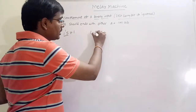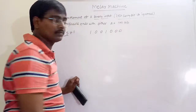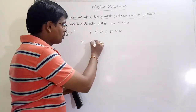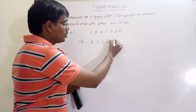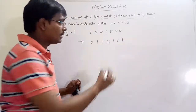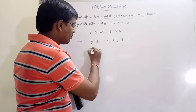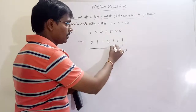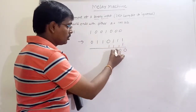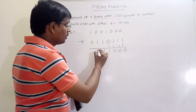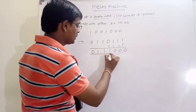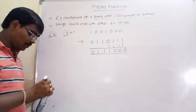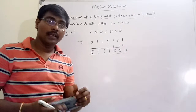As an example, take 1 0 0 1 0 0. First perform the 1's complement: 0 1 1 0 1 1. Then add 1 to get 0 1 1 0 1 1 1 0. This is the way we calculate 2's complement.